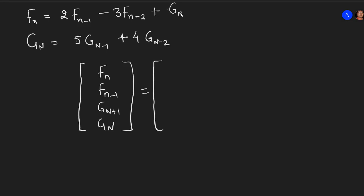Now on the right side if we have to express, we will write the second term as it is. The first term will be using the expansion of the recursion. So Fn will be written as 2 times F of n minus 1 minus 3 times F of n minus 2 plus 1 times G of n. Let me also put 0 times G of n minus 1.